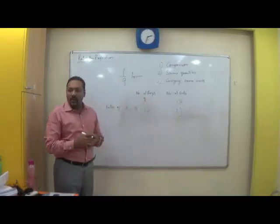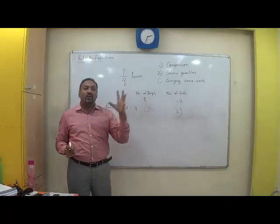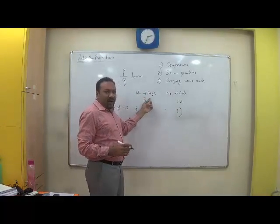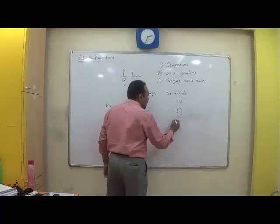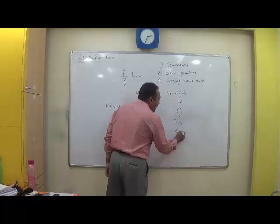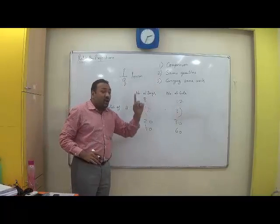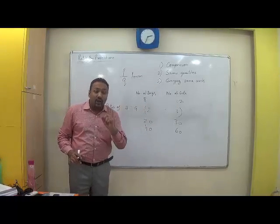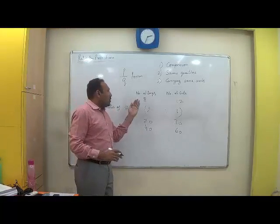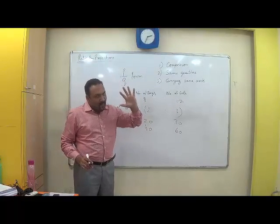Now a ratio does not give me the exact numbers, it does not. Number of boys, if it would have been 20 and 30, again the ratio would have been same. If it would have been 40 and 60, again ratio would have been the same. So ratio does not give you the actual quantity. Ratio only gives you a comparison, that is, for every 2 boys in the class, there are 3 girls. Clarity?